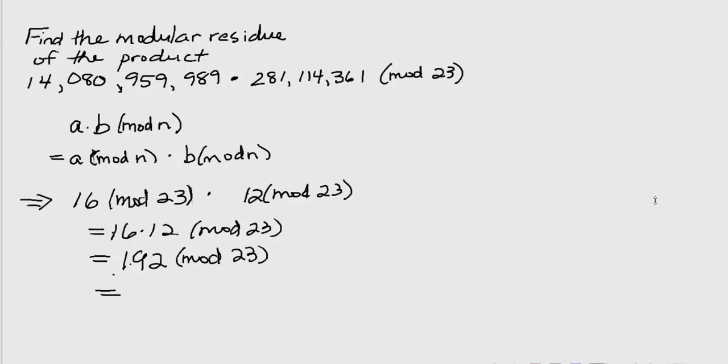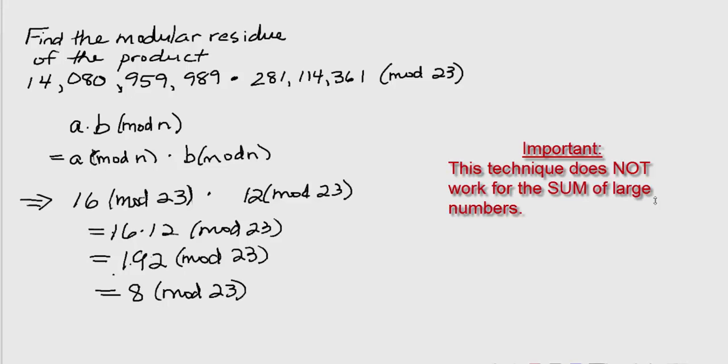So 192 mod 23 is the same as 8 mod 23. And that's how you find the residue of the product of very large numbers.